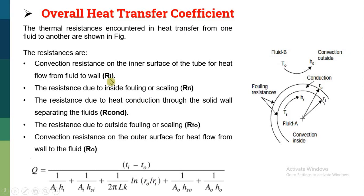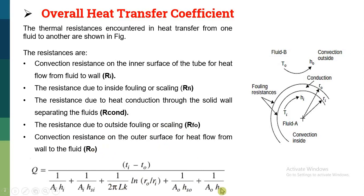The inside convective resistance is given by 1/(Ai·hi). Resistance due to inside fouling is given by 1/(Ai·hsi). Resistance due to conduction through the tube wall is given by its respective formula. Resistance due to outside fouling is given by 1/(Ao·hso). And finally, the convection resistance for the outside surface is given by 1/(Ao·ho).